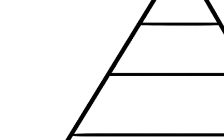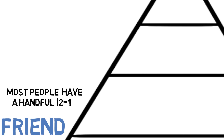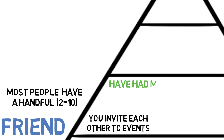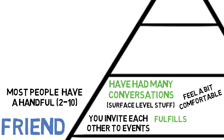The tier above this is the friend. Most people have just a handful of friends. Friends are people that you've spent a fair amount of time with and shared a couple of enjoyable interactions. You invite each other to hang out at events and parties. These are people that you've had many conversations with — mostly surface-level stuff — but you've shared a decent amount of good laughs together. These are people that you feel somewhat comfortable around. Friends fulfill our need for human interaction to some extent.